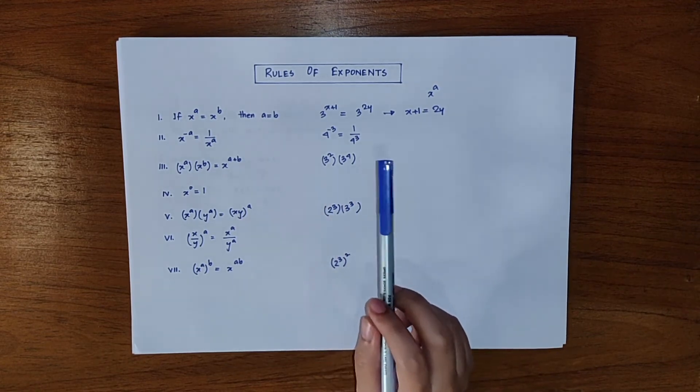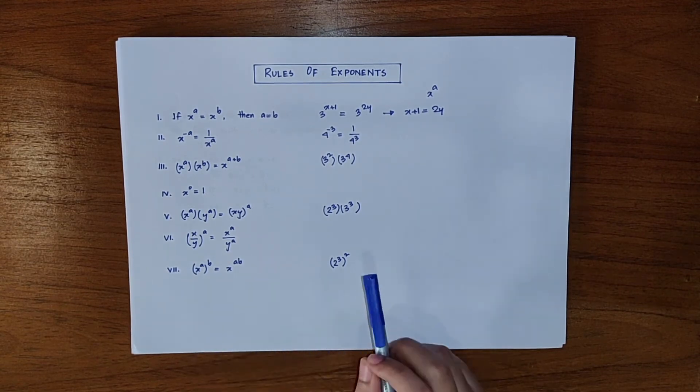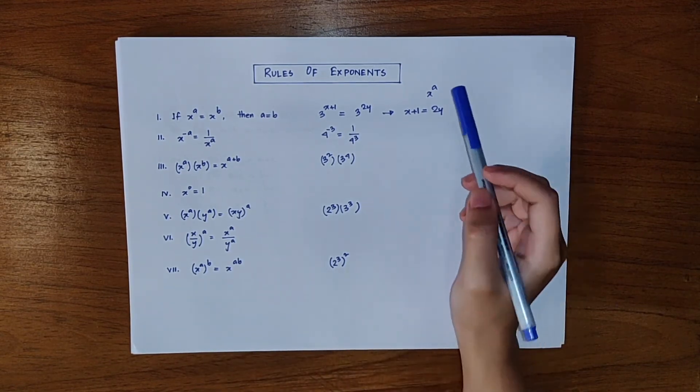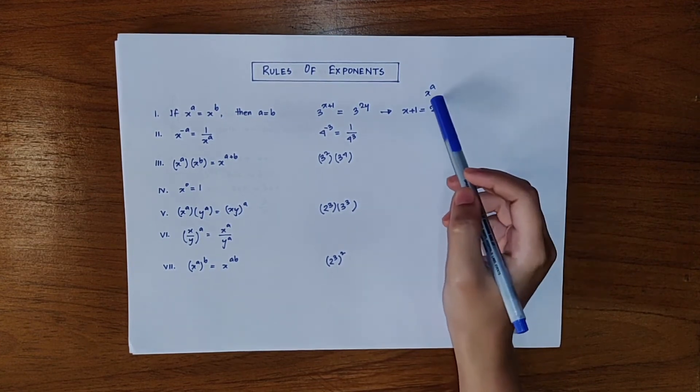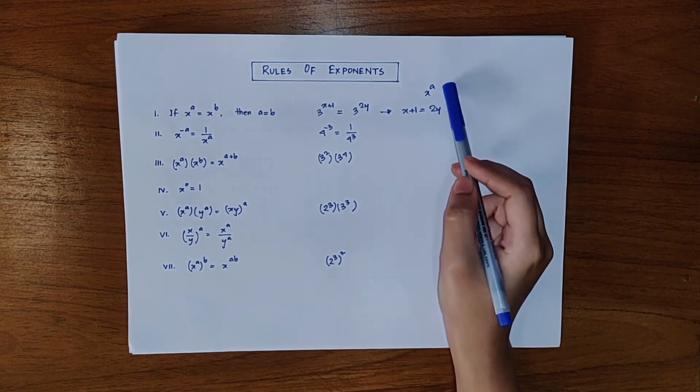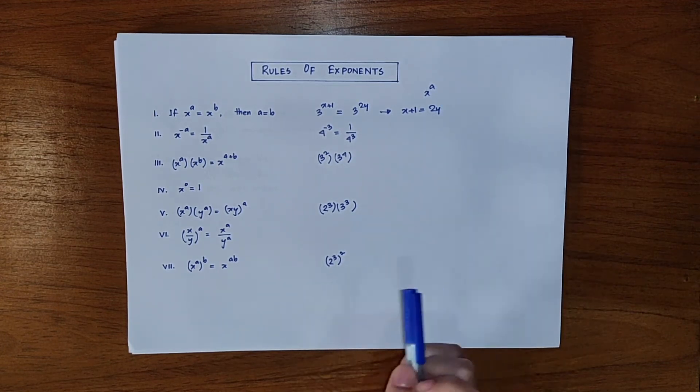We'll start with the rules of exponents. Now from previous discussions we know that if a number x is multiplied a times it can be written as x to the power a where x is the base and a is called the exponent. We'll now see some basic rules of exponents.